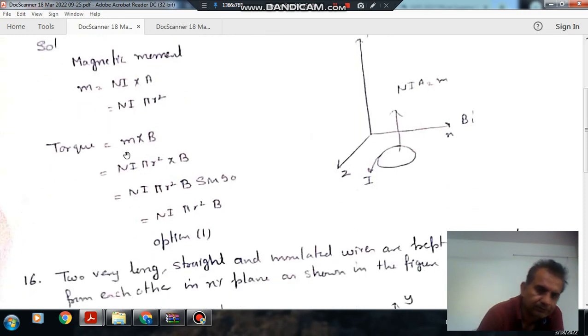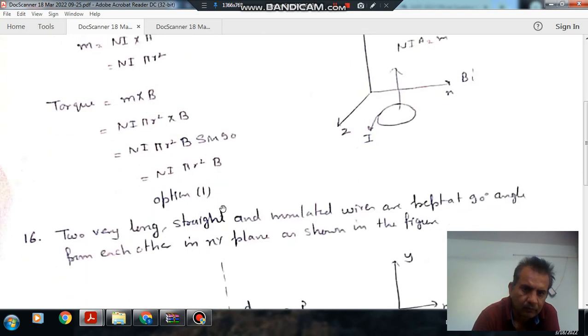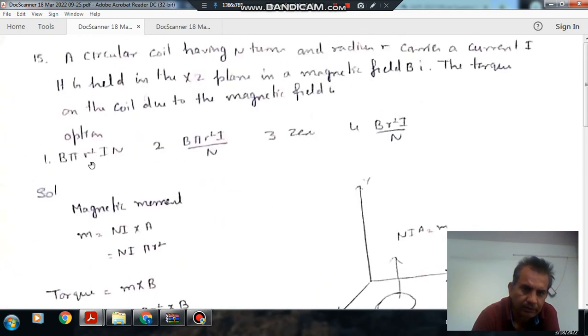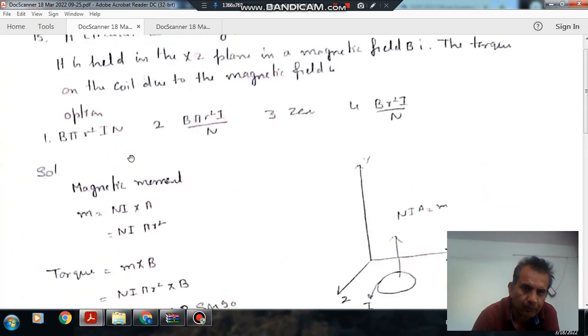We know that torque is magnetic moment cross magnetic field. As the direction of magnetic moment is in one direction and the direction of magnetic field is in another direction, they make a 90 degree angle. So it will be N·i·πR²·B. Answer is N·i·πR²·B, option 1.